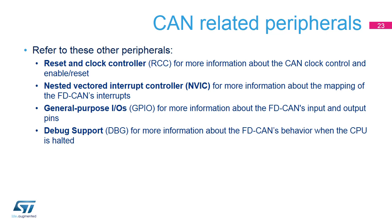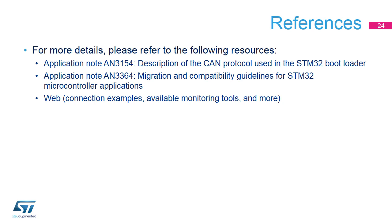For additional information, refer to the training for these peripherals which may affect FDCAN behavior: Reset and Clock Controller (RCC) for more information about CAN clock control, enable or reset; Interrupts for more information about the mapping of FDCAN's interrupts; General Purpose IOs (GPIO) for more information about FDCAN's input and output pins; Debug Support (DBG) for more information about FDCAN's behavior in debug mode. Application notes covering the CAN topic are available on www.st.com. To learn more about the CAN interface, you can also visit a wide range of web pages discussing the CAN communication protocol and bus monitoring tools. Many digital oscilloscopes support direct reading and analysis of data transmitted over the CAN bus.